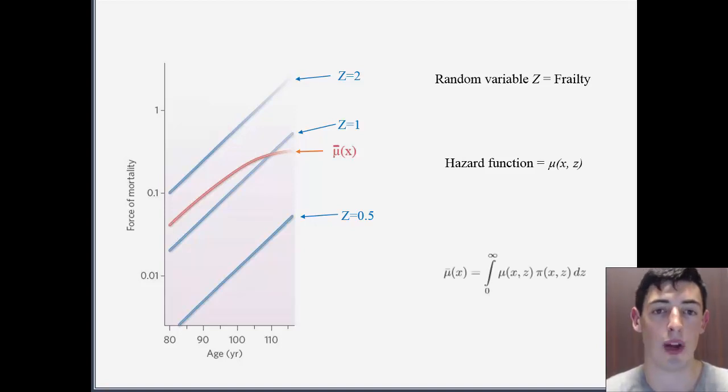Here, we have the formula for the average force of mortality, which is graphically represented by the red line.